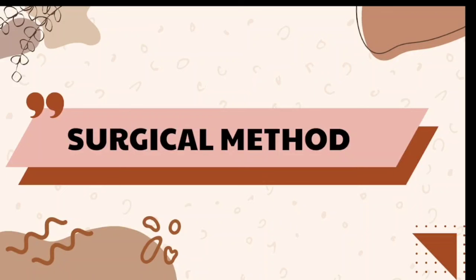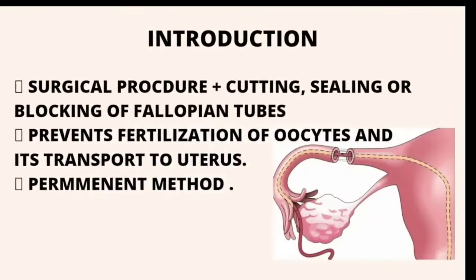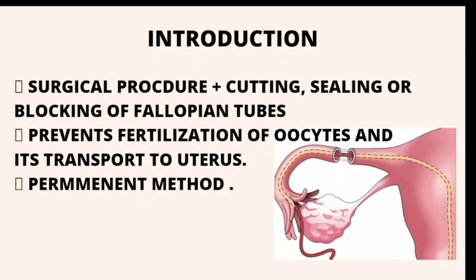The next method is the surgical method — one of the terminal methods of contraception — which involves permanent sterilization achieved surgically or laparoscopically. Tubectomy is the permanent method, recommended only when the family is complete. In this, the fallopian tubes are cut, and the cut ends are ligated and buried. The laparoscopic occlusion method uses silicone rubber bands called Fallop rings to occlude the fallopian tubes; this method is much quicker, simpler, and requires no hospitalization.